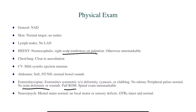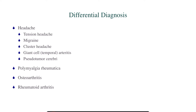Now we need to formulate our differential. For headache, you should be able to list off common causes: tension headache (probably the most common), migraine (this patient has a history of it), cluster headache, temporal arteritis, pseudotumor cerebri, and subarachnoid hemorrhage (highly unlikely here). For the joint pain, it could be osteoarthritis — she has that diagnosis — but because it's worse in the morning, consider rheumatological causes such as rheumatoid arthritis or polymyalgia rheumatica, which is very common in older adults, particularly over age 50.